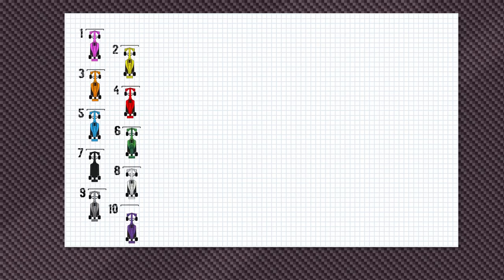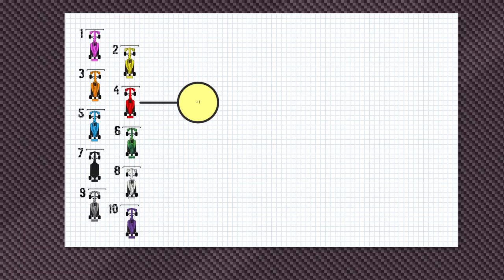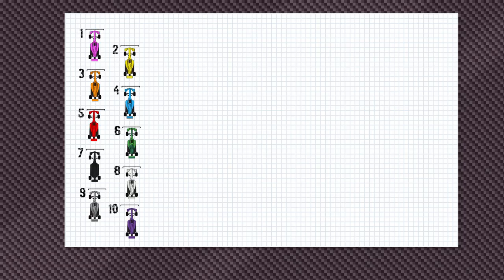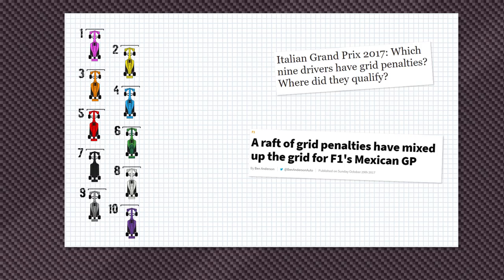Let's start at the most basic point. Grid penalties are penalties applied to a driver's starting grid position. A one place penalty applied to a driver who qualified 4th means they'll have to start from 5th. That sounds simple enough, but the complications arise when there's more than one penalty that needs to be applied. In today's world of F1, grid penalties are the go-to easy forfeit for rule infringements or technical transgressions. As a consequence, most races, especially in the second half of the season when parts start to fail, will have multiple grid penalties applied to the starting order.